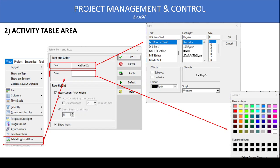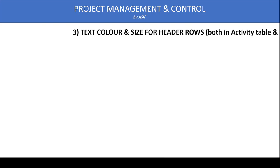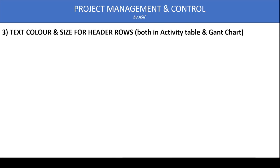Similarly, when we select Color in this dialog, it sets the background color for the activity table area. Normally a white background color is used, but if your company has a specific template, you can modify the background color accordingly.